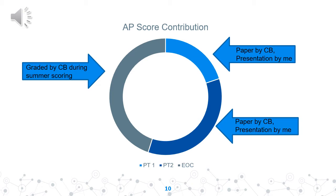Here's a graphical representation of your AP score contribution. Performance Task 1 is worth about 20%. Performance Task 2 is worth 35%. That's 55% — over half of your AP score is already determined by the time you take the end-of-course exam, because you've already submitted your PT1 and your PT2. The end-of-course exam contributes about 45% of your AP score.